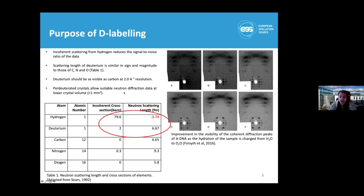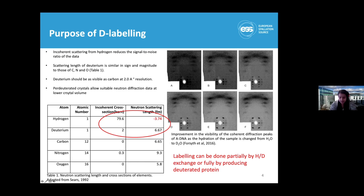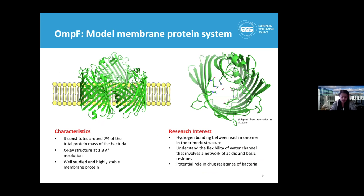Another major advantage of deuterium labeling is that you can get away with smaller crystals for neutron diffraction, which will be possible when ESS is running. Labeling can be done in three ways: simply diluting your protein with deuterium, or producing the protein initially in the presence of deuterium. For this study, we chose a protein which is very well studied and highly stable, because neutron crystallography is a complementary approach.